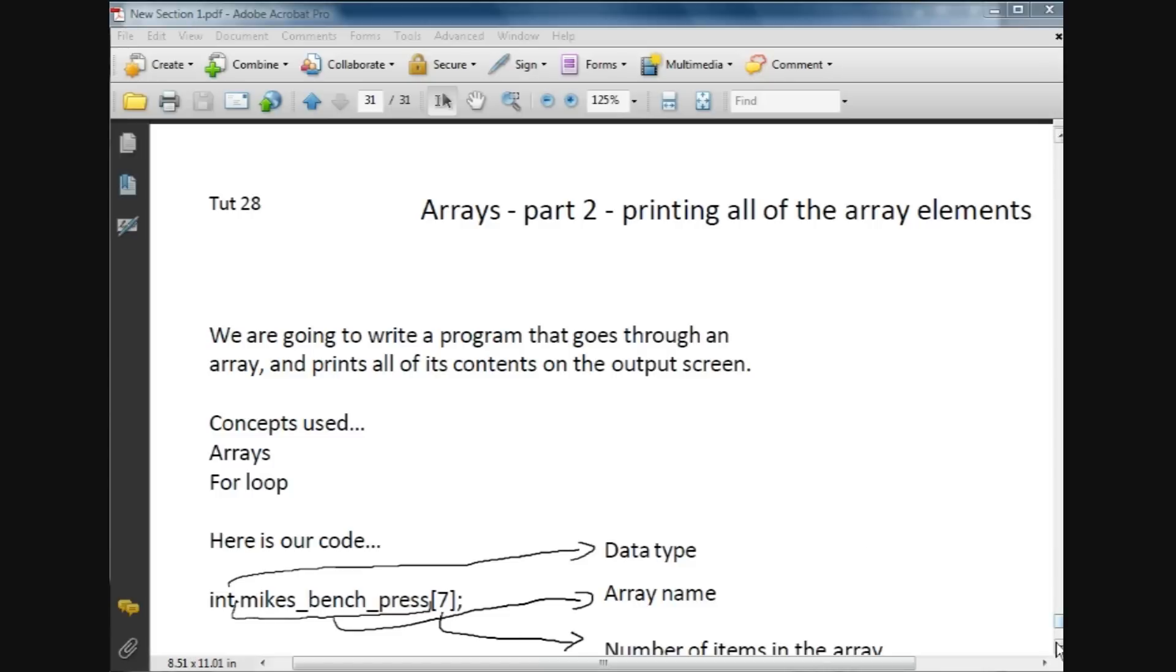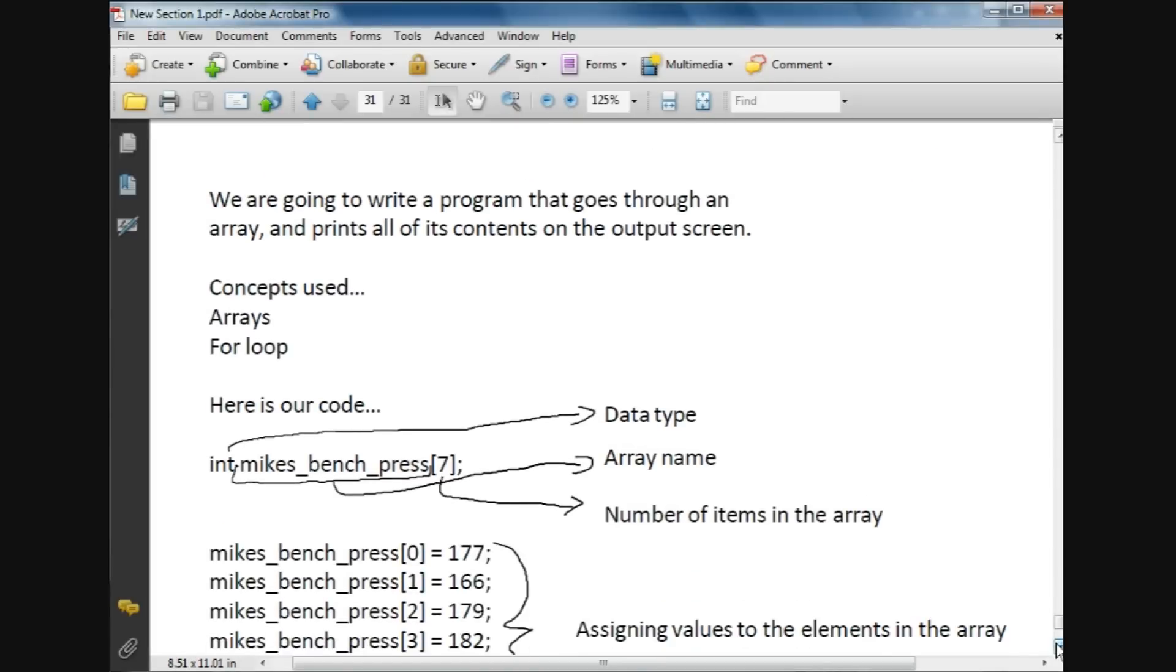So basically, here is our code. Let's go through this. Here we have declared an array of integer data type. The name of it is mikes_bench_press, and then there's going to be seven items in there—basically his max bench press over a seven-week period, so he's doing it once a week.